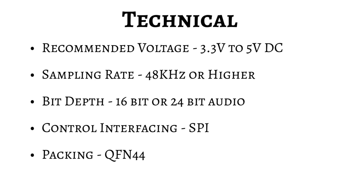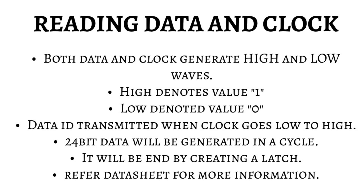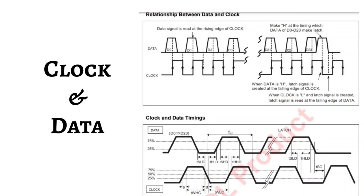The lack of master volume control is the biggest drawback of the R2S15902FP. For technical details: the voltage range is around 3.3 to 3.5V DC, the sampling rate is 48 kHz or higher, and the bit depth is 16-bit or 24-bit audio. The control interface uses SPI programming. The package is QFN44, with 11 pins on each side giving 44 pins total. Regarding reading data on clock: all data consists of zeros and ones — zero means low, one means high. The data signal is read at the rising edge of the clock, meaning when the clock transitions from 0 to 1, you can read the data.